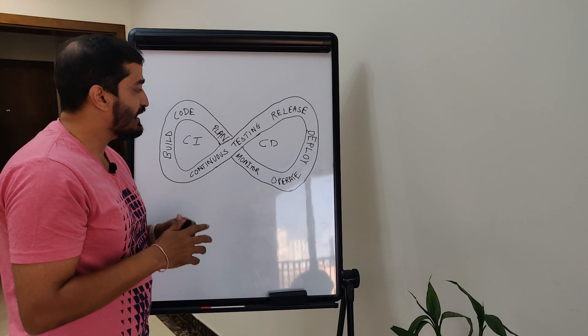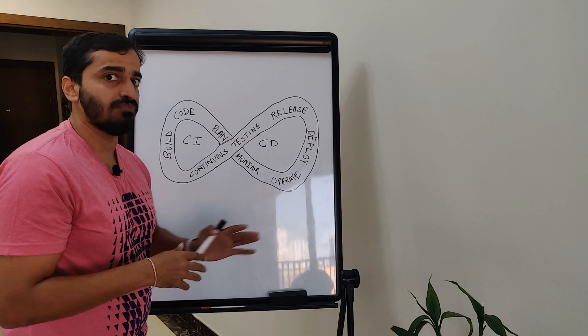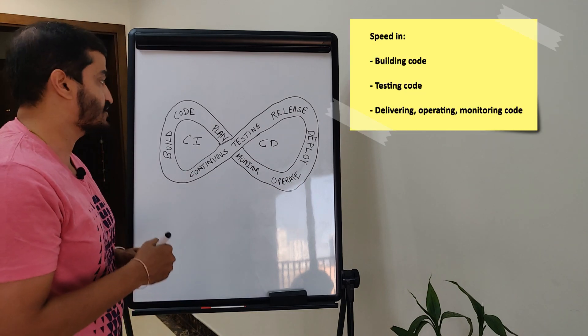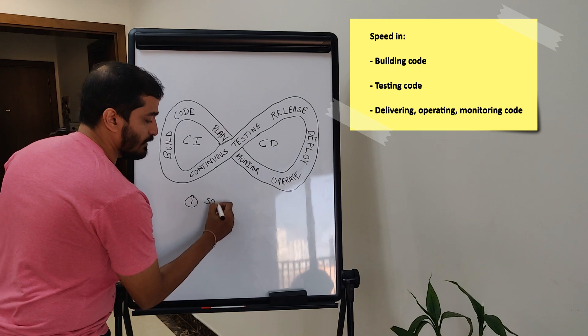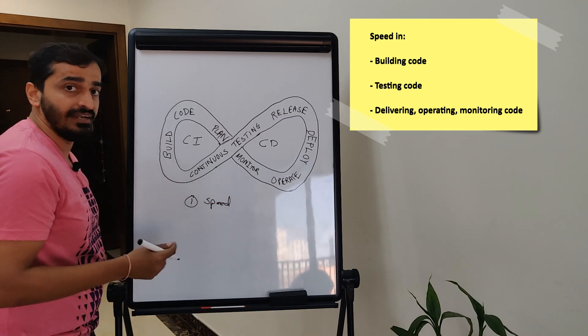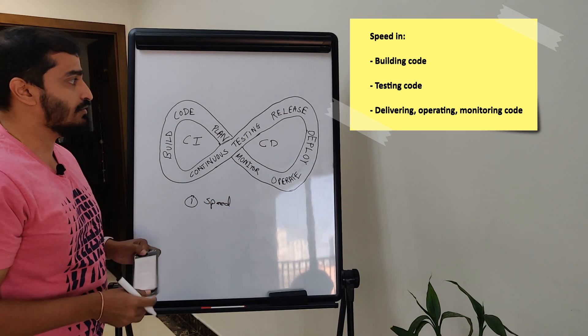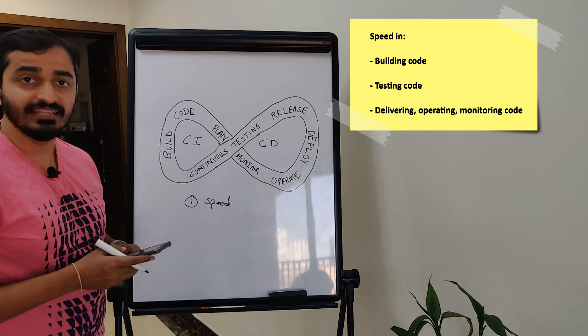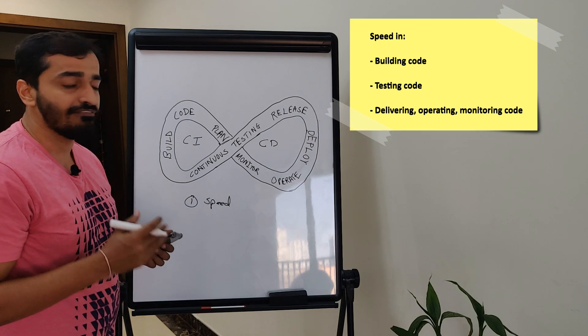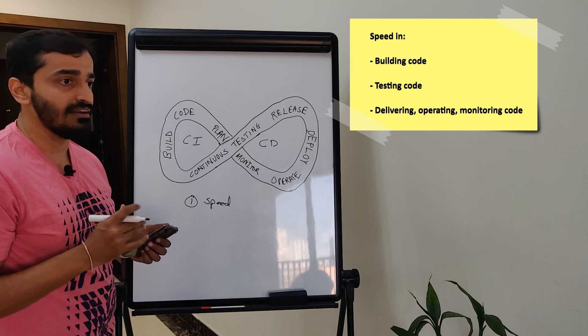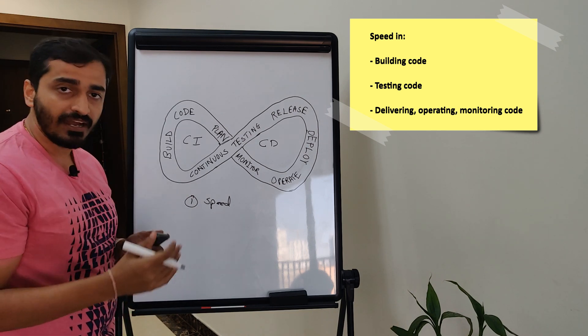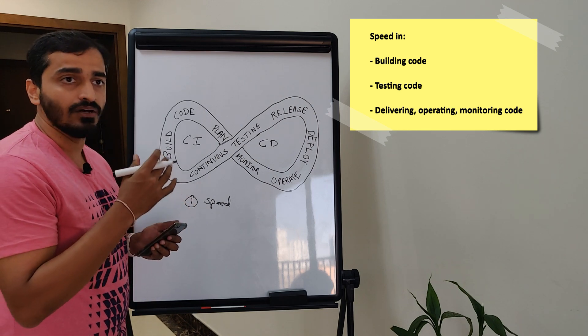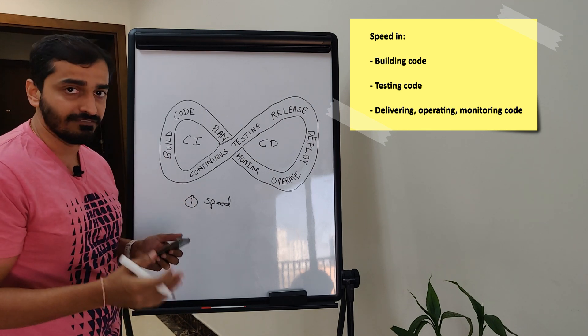So why does one essentially want to deploy this kind of process? Let's look at the benefits. Number one, you can do things faster. So the number one benefit is speed. Anybody who's working on anything like this definitely wants to deploy code faster, or definitely wants to meet customer demands faster, wants to go to market faster. And that's why the whole principle has come into play in the first place.